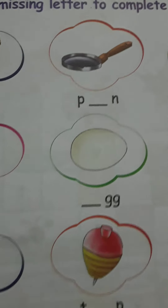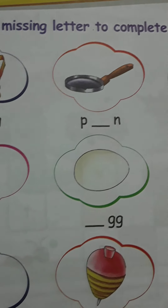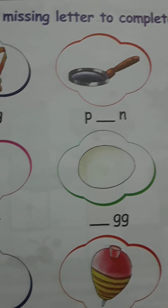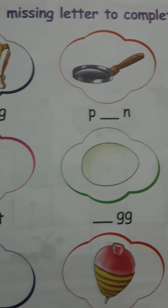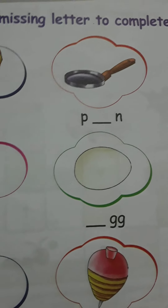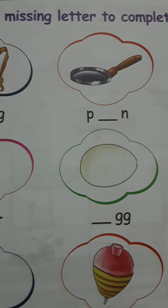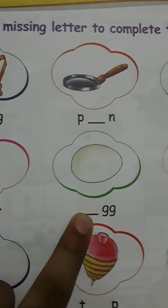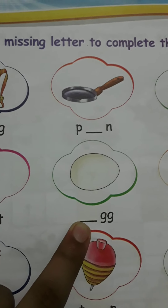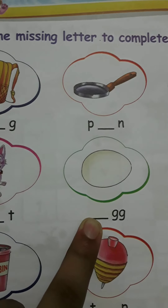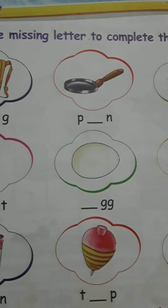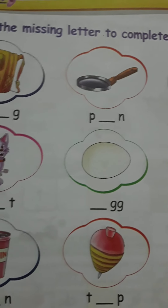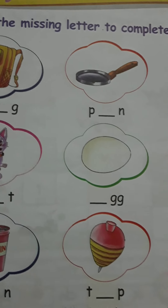Next, we will see that this is an egg. And what is this spelling? E-G-G. So what is missing here? E. And writing E will become egg. Very good.